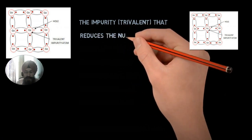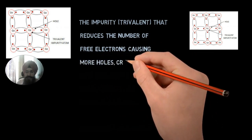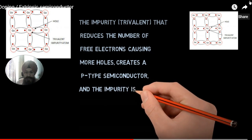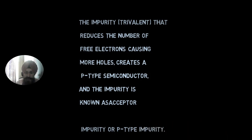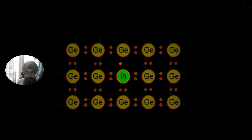If trivalent impurity is added, like gallium, it produces one hole per impurity atom. These types of atoms are called acceptor atoms because they accept electrons from nearby silicon or germanium atoms — so this is called acceptor impurity. Indium is another example: it creates one hole and acts as an acceptor atom, similar to gallium.